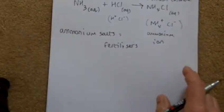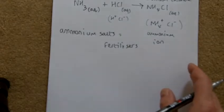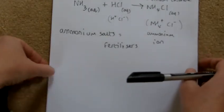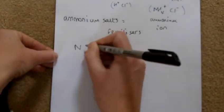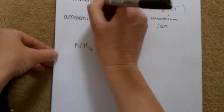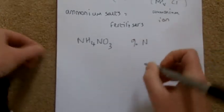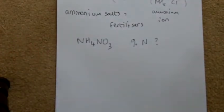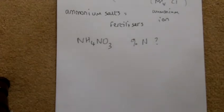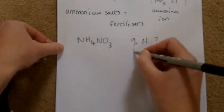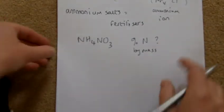You also need to be able to work out the percentage of nitrogen in a fertilizer. For example, take ammonium nitrate — NH₄NO₃. If you're a farmer applying fertilizer to land, the plants need nitrogen to grow, so you need to know how much nitrogen is in the fertilizer to get the best value. This is called the percentage of nitrogen by mass.